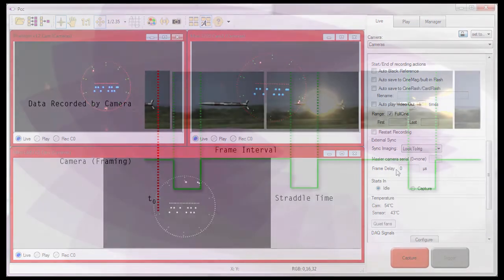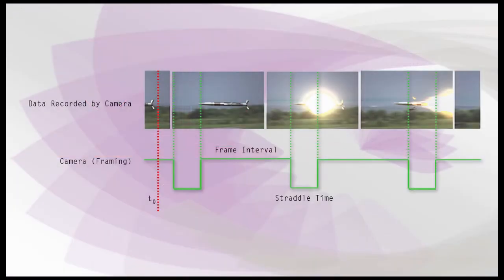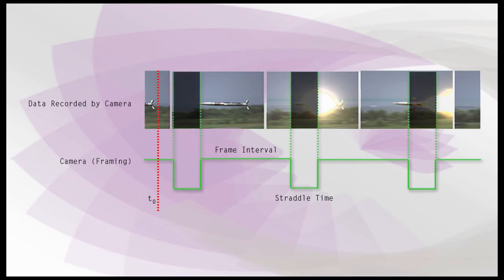So why would I want to set a frame delay? To explain, you need to understand the concepts of frame interval and straddle time. The frame interval, or frame duration, is the reciprocal of the exposure time setting — essentially the amount of time a sensor's diodes will charge when exposed to light. Each of those diodes needs a certain amount of time between each frame to clear their charge from the previous exposure. This time is known as the straddle time, which can be up to 7 microseconds in duration. During this straddle time, the diodes cannot accept a new charge; otherwise, the resulting image would experience a ghosting effect from the previous exposure.